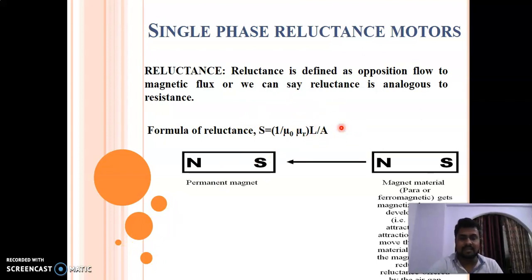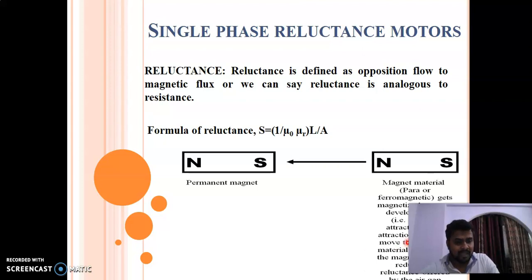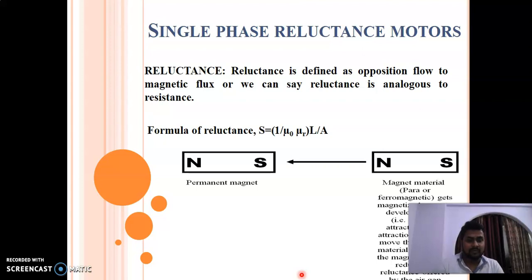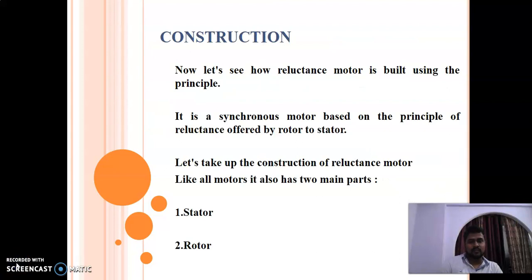Let us take an example. We have a permanent magnet and a magnetic material, which may be either a ferromagnetic or paramagnetic material. This magnetic material gets magnetized due to the permanent magnet, so it will develop a force of attraction and get magnetized. The force of attraction will try to reduce the reluctance offered by the air gap, and this force of attraction will cause the magnetic material to move towards the permanent magnet.